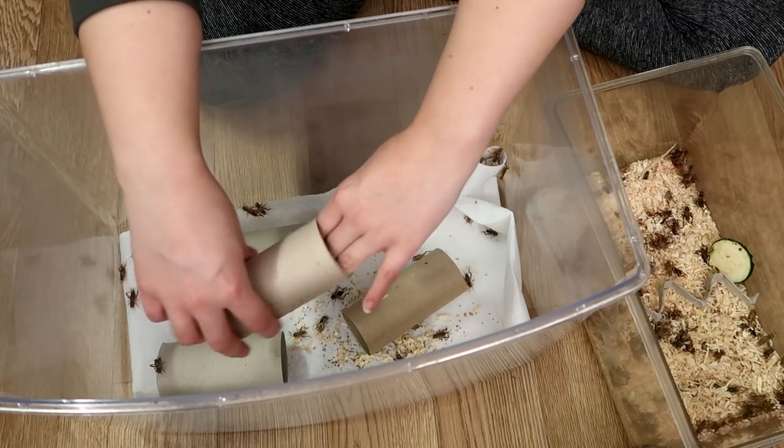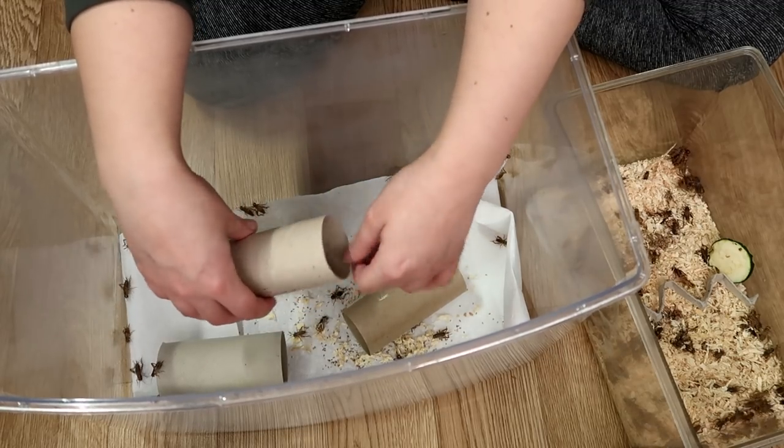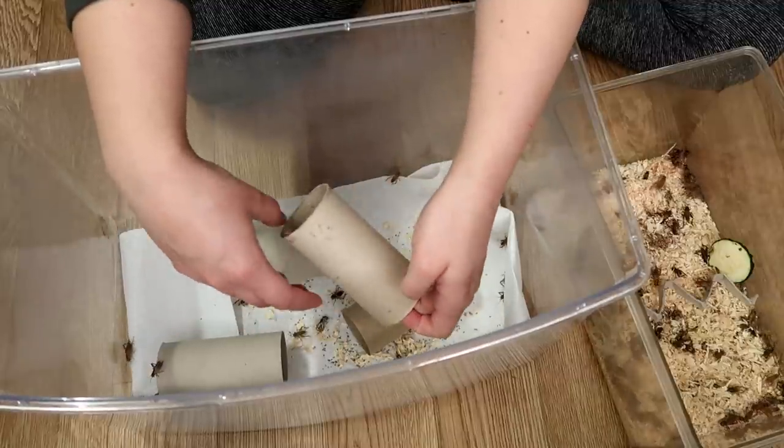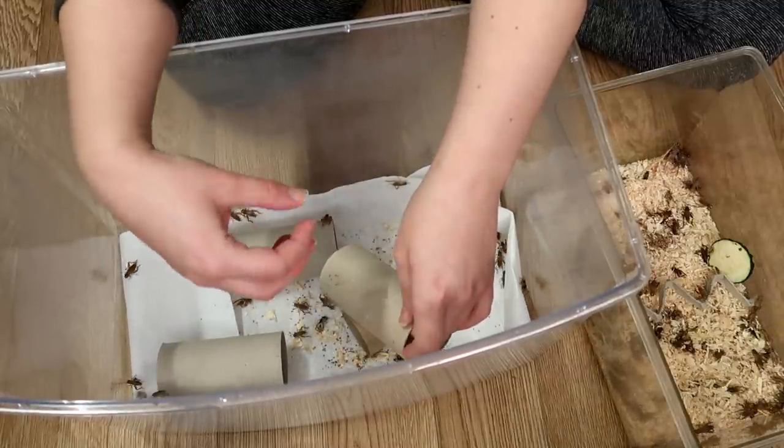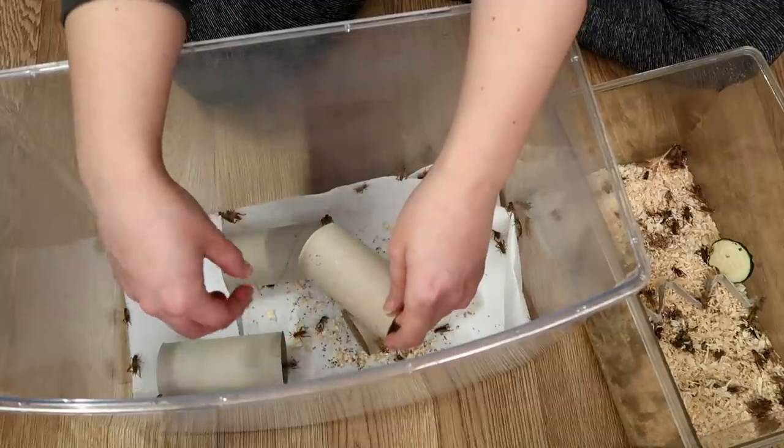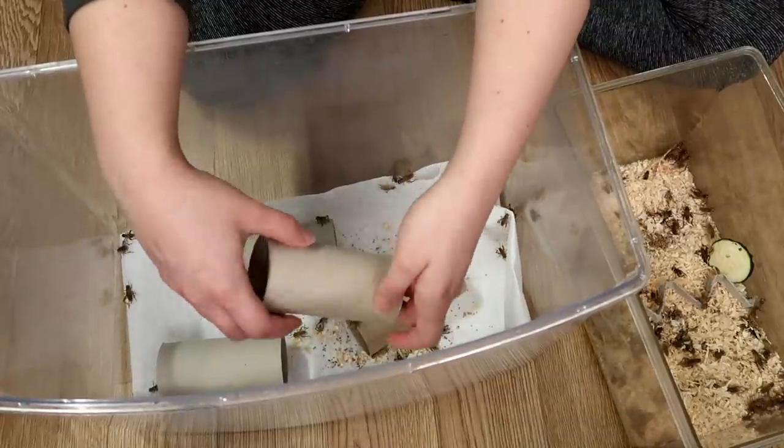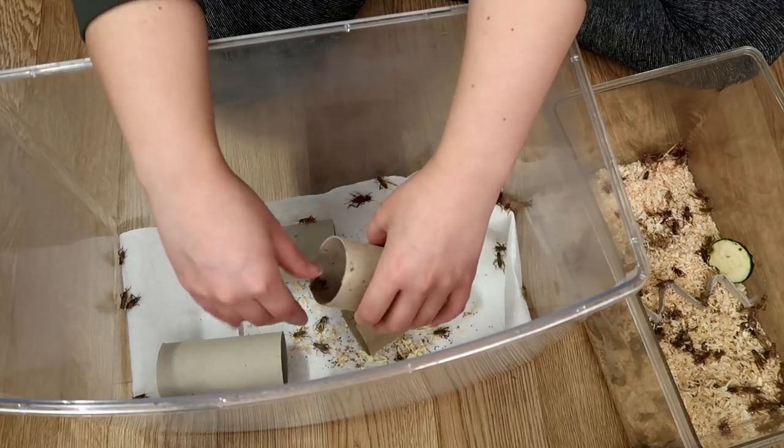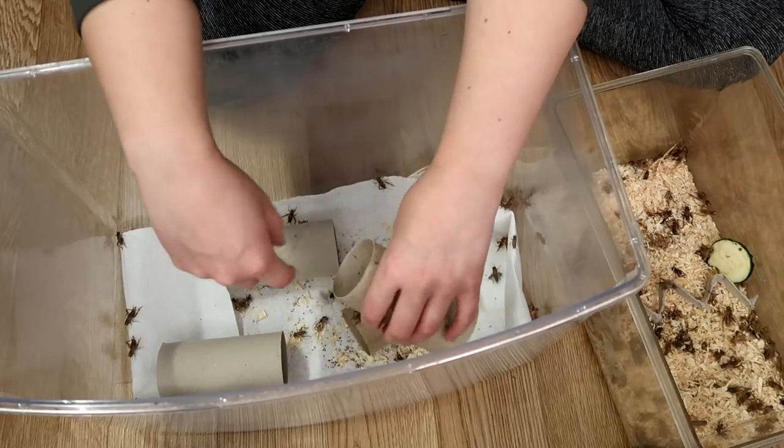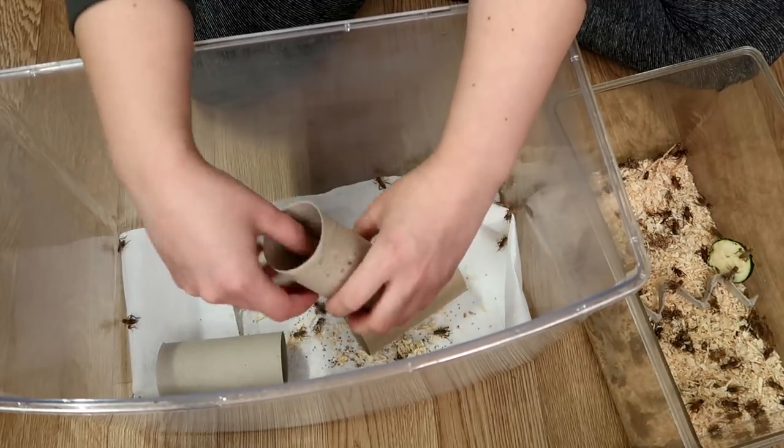So sometimes these mites will come in feeder insect bedding. What I've decided to do is remove each cricket, as you can probably tell, put them in this freshly disinfected tub. We've got paper towel in there, so that can easily be changed if it has to be.